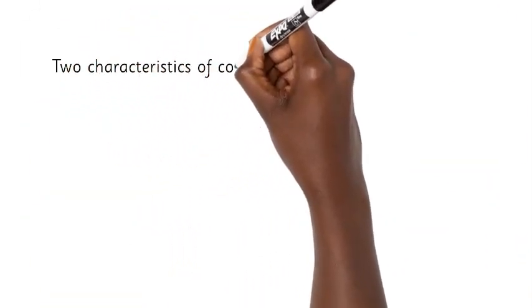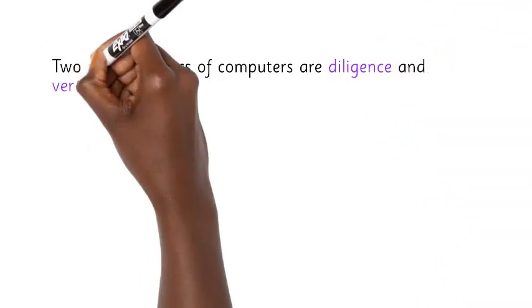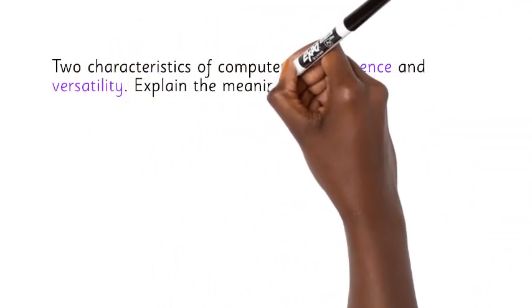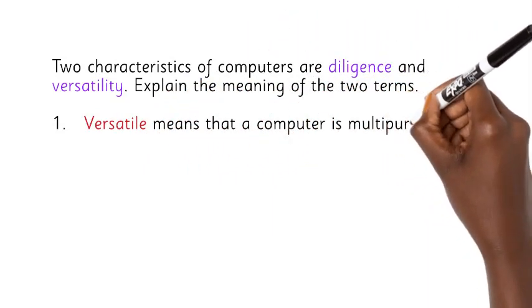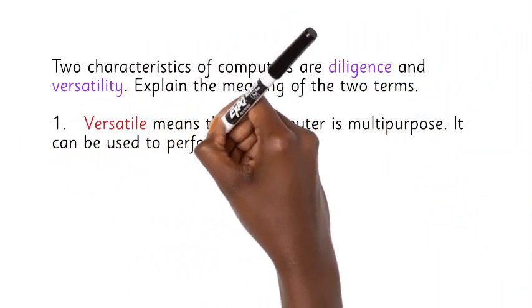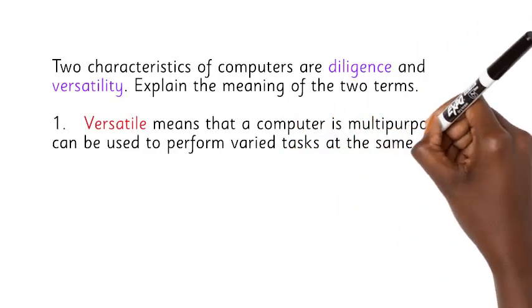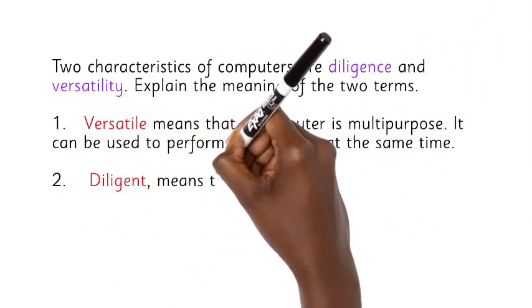Two characteristics of computers are diligence and versatility. Explain the meaning of the two terms. 1. Versatile means that a computer is multi-purpose. It can be used to perform varied tasks at the same time.